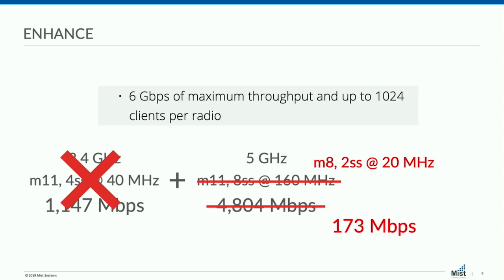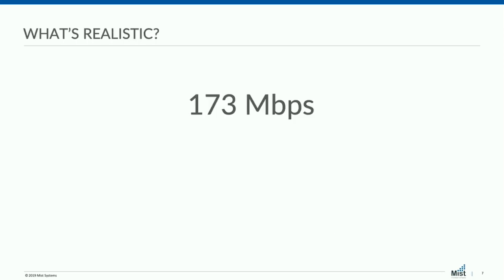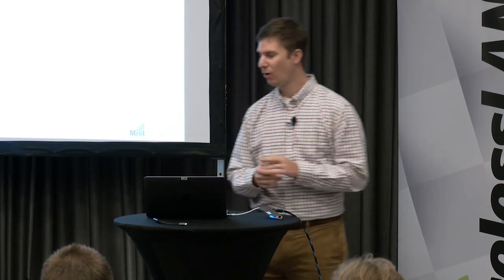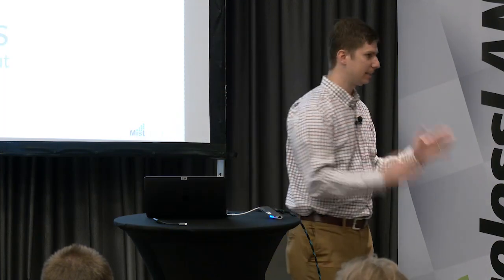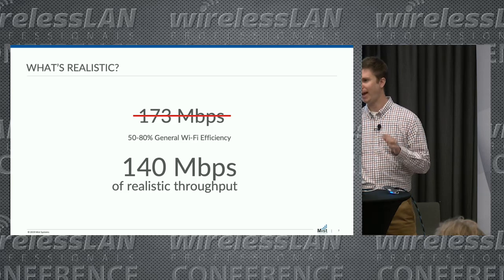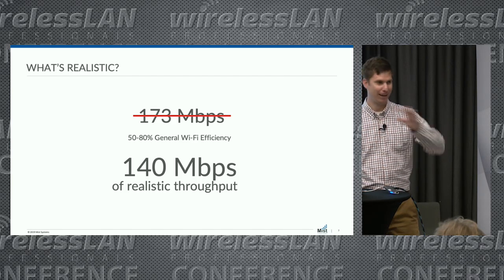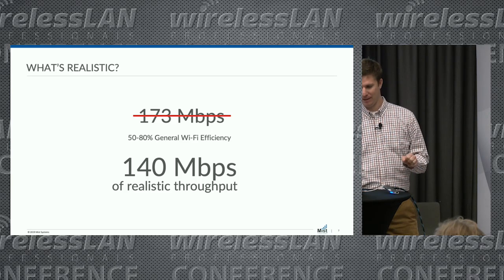So what does this 173 actually mean? It's a data rate — it's not actual throughput. With Wi-Fi you kind of get 50 to 80% throughput of the data rate, depending on the aggregation capabilities of the client and a couple other things. So realistically I can get 140 Mbps of actual throughput — again, a big drop.